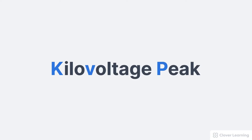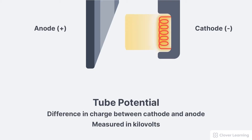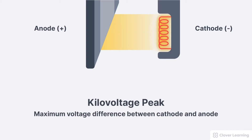The KVP is what accelerates electrons and forces them through the x-ray tube. During an x-ray exposure, the cathode is negatively charged and the anode is positively charged. This difference in charge is called the tube potential, or potential difference. We measure the tube potential in units of kilovolts, which is why this technical factor is called the kilovoltage peak.